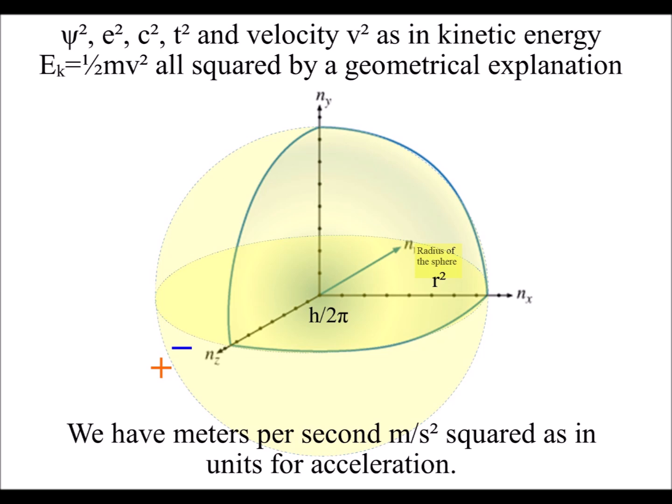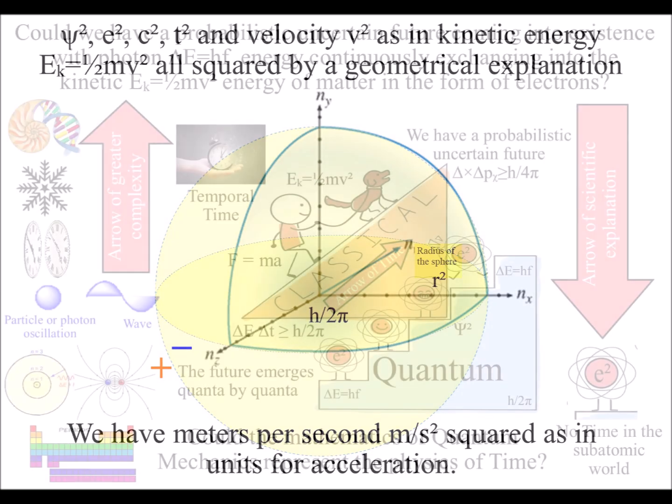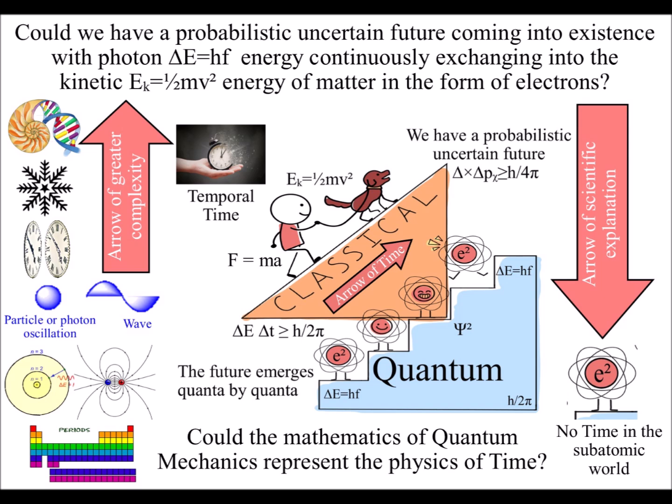Light and matter, the future in the form of electrons moves as waves with particle characteristics as a probabilistic future comes into existence, quantum by quantum, moment by moment.